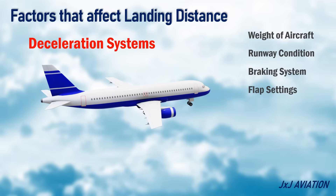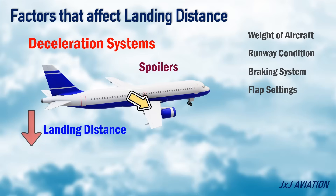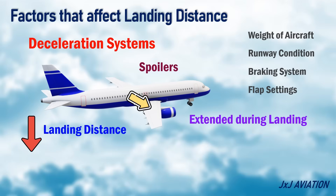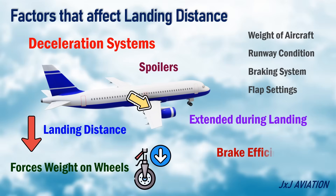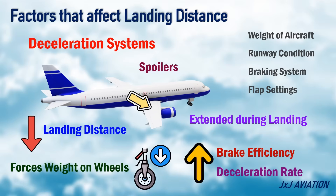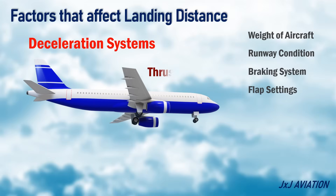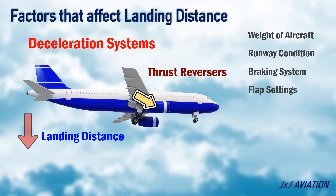Deceleration Systems. The spoilers significantly reduce the landing distance. The spoilers are extended when the aircraft lands. This forces the aircraft weight on the wheels, so the brake efficiency increases, which increases the deceleration rate. When the thrust reversers are deployed, the landing distance decreases because it opposes the aircraft's forward motion.